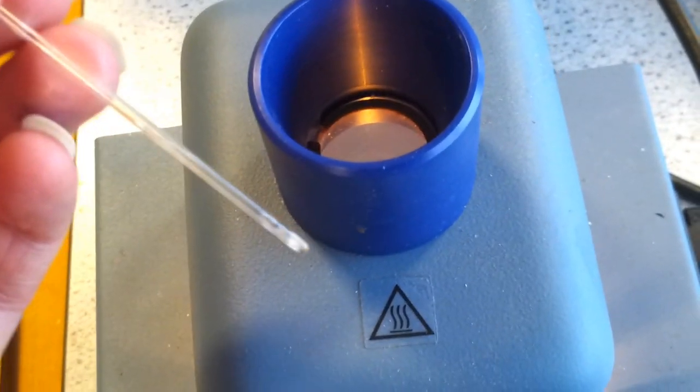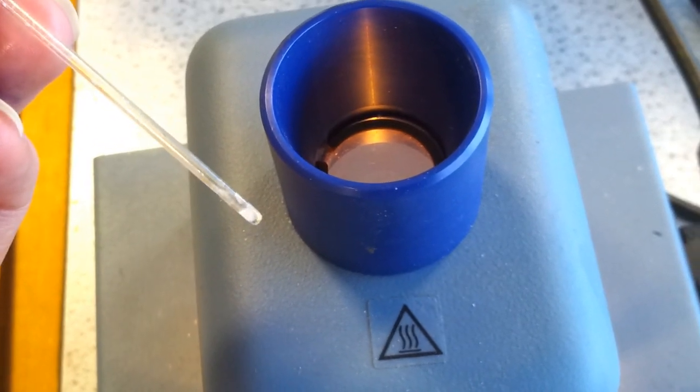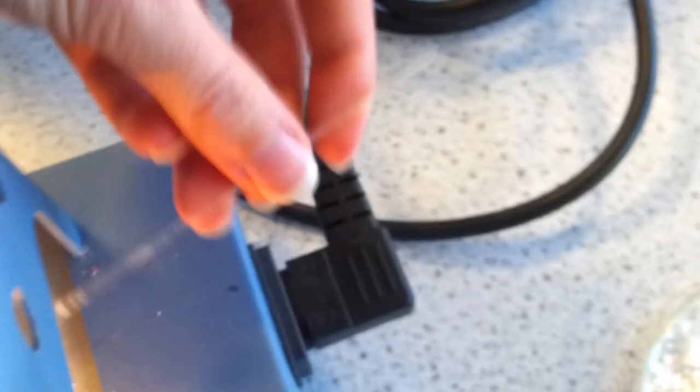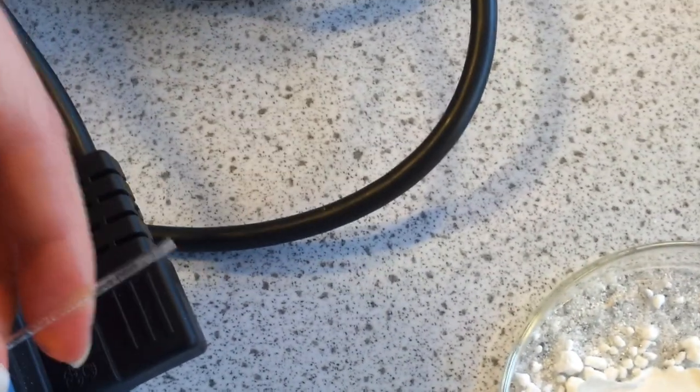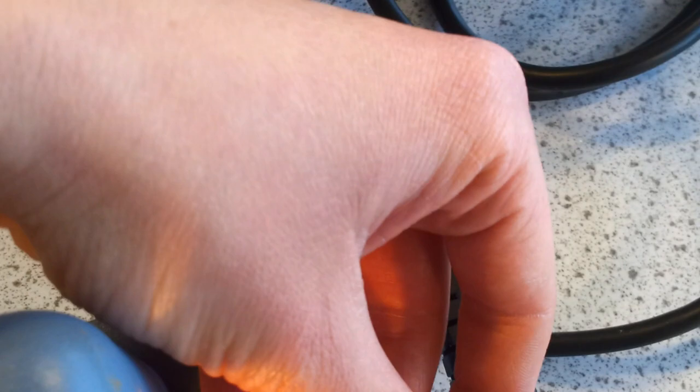So it started melting at 132 degrees, and finished melting at 134. So bearing in mind that pure aspirin has a melting point of 135, ours is slightly impure, because it melted between 132 and 134.